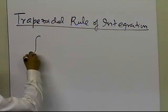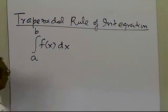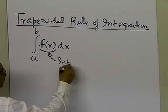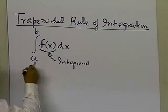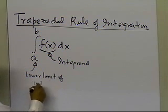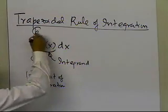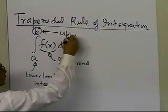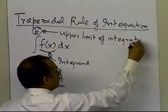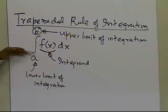So let's suppose somebody tells you that they want you to find the value of an integral of a particular form, where the integrand is given. We call this the integrand. That's the lower limit of integration, and this here is called the upper limit of integration. So somebody is asking you to calculate the value of the integral of the function f of x, which is the integrand, from a to b.